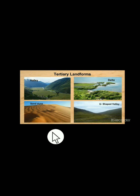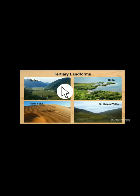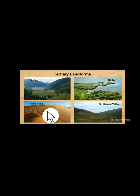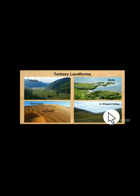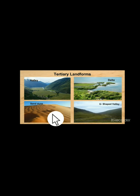So we have got these kinds of landforms that are formed. We have got valleys, deltas, sand dunes in the deserts, U-shaped valleys — you can see the U-shape — and V-shaped valleys. So we get all these various landforms occurring due to the exogenetic processes.